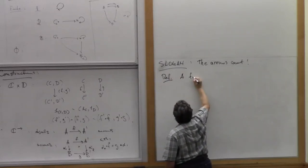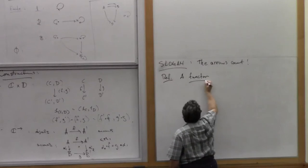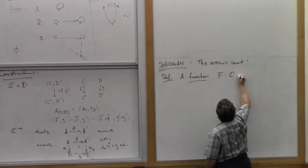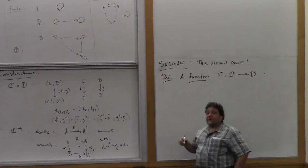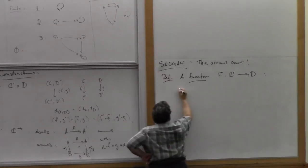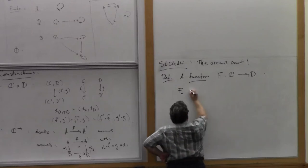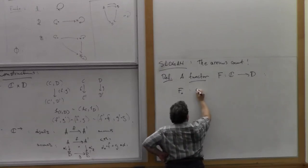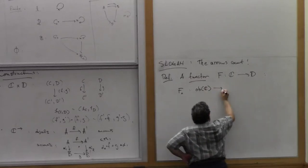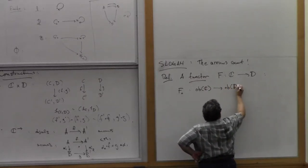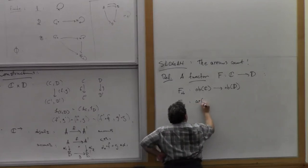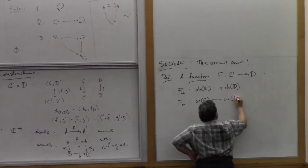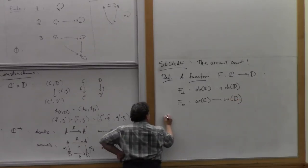A functor F from one category C to another category D has two parts: an object part that takes the objects of C to the objects of D, and an arrow part that takes the arrows of C to the arrows of D, plus some laws.